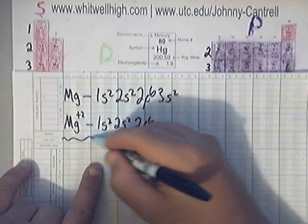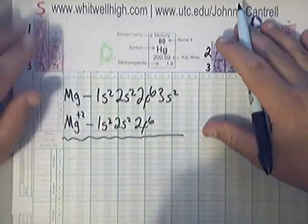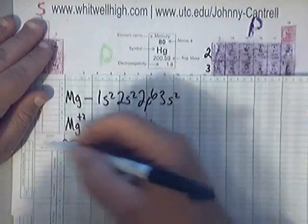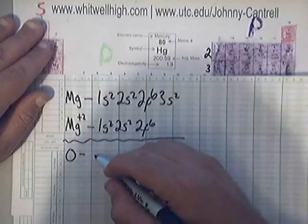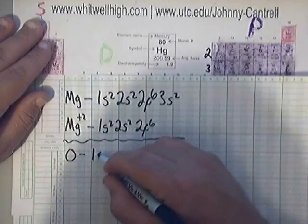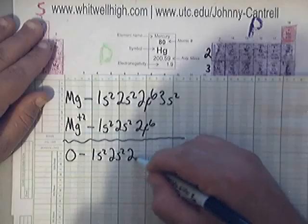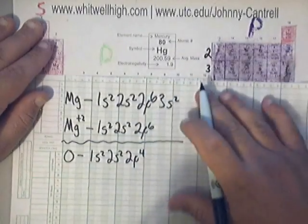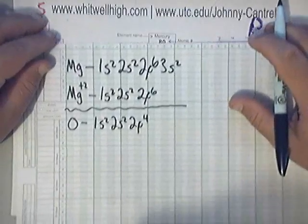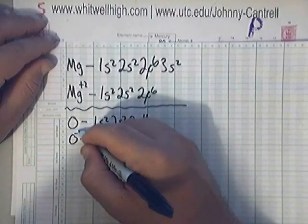Now, anions, basically ions that have a negative charge. Let's look at one. Oxygen, we've done this one earlier. Oxygen, neutral oxygen, is 1s2, 2s2, 2p4. Now, oxygen as an ion is O with a negative 2 charge.